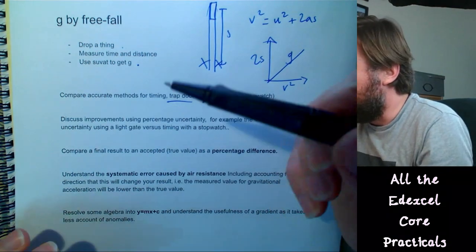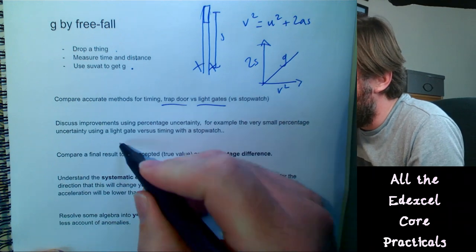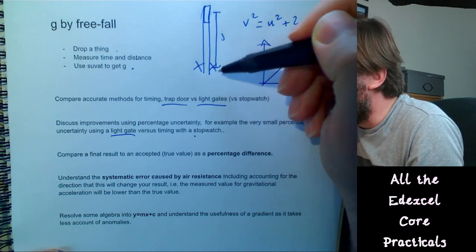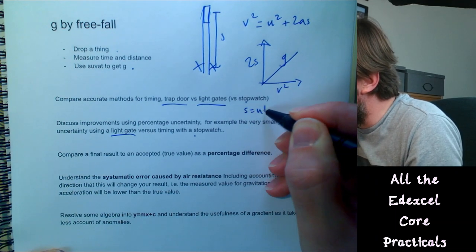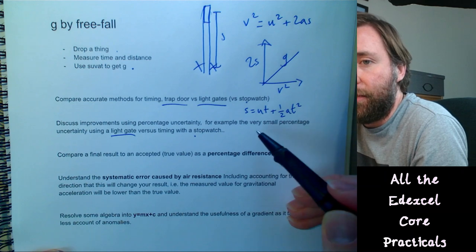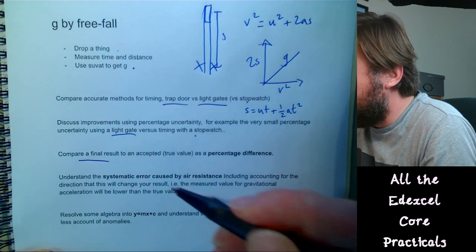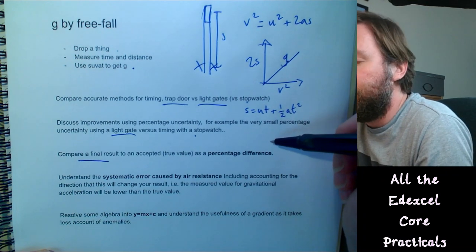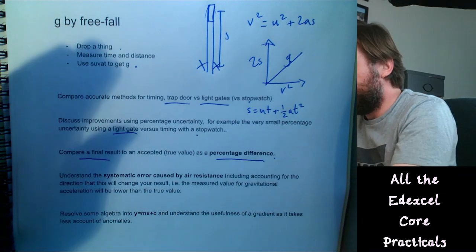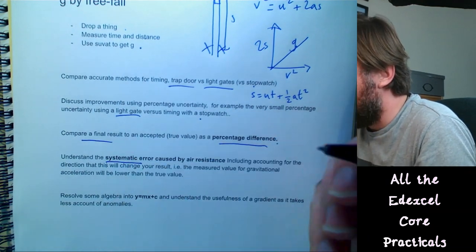They might ask you to discuss improvements using percentage uncertainty — for example, the very small percentage uncertainty from using a light gate versus timing with a stopwatch. If using a stopwatch you'd use s = ut + ½at². Importantly, this practical requires you to compare your final result — whatever you get as your gradient — with the accepted value of g, and state that as a percentage difference. That is a really important core skill across all the core practicals.